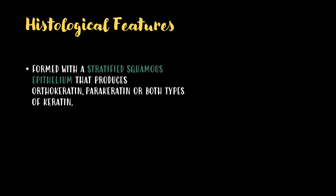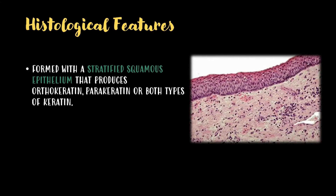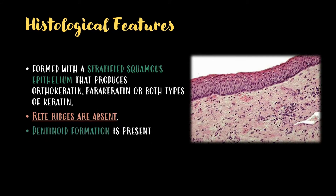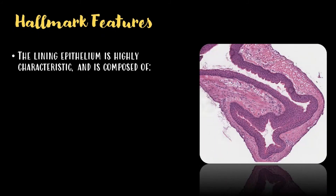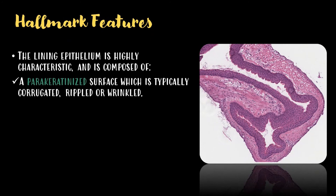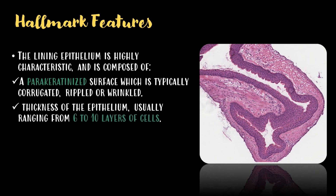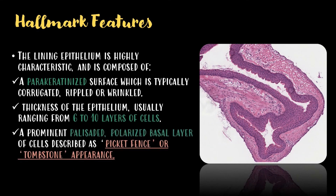The histological features of OKC: it is formed with a stratified squamous epithelium that produces orthokeratotic, parakeratotic, or both types of keratin. Rete ridges are absent and dentinoid formation is present. The hallmark features of the lining epithelium include a parakeratotic surface which is typically corrugated, rippled, or wrinkled. The thickness of the epithelium usually ranges from six to ten layers of cells, and a prominent palisaded polarized basal layer of cells, often described as picket fence or tombstone appearance.